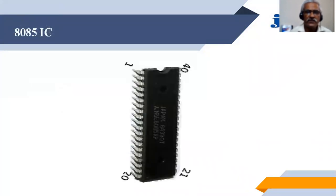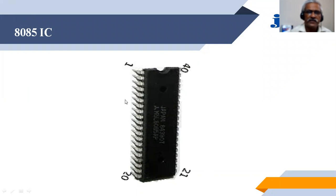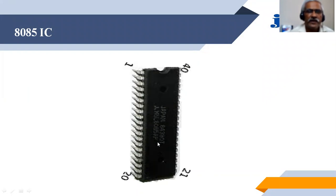The first topic is the physical appearance of the 8085 IC — how does it look and how to identify the pins? In the figure, you are seeing the physical appearance in a package of the 8085 IC. You can read on this IC that it is written '8085A', so this is the identification number for this IC.